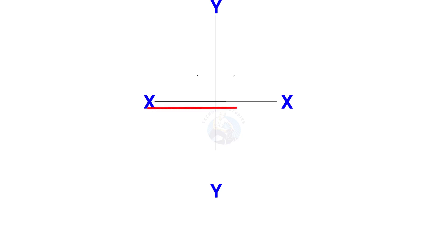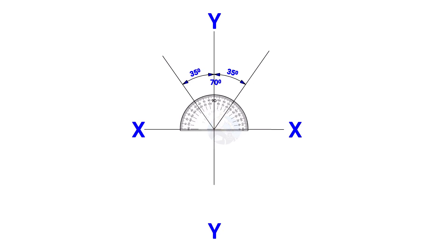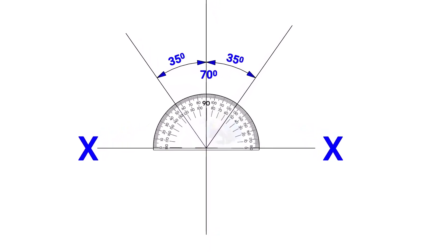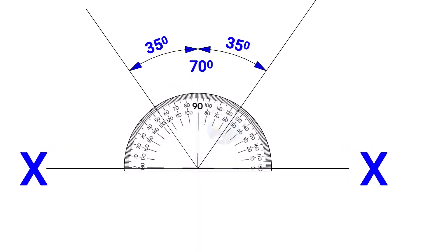Draw line XX and its perpendicular line YY. Since the included angle of the Y branch is 70 degrees, mark 35 degrees on both sides of the axis YY.